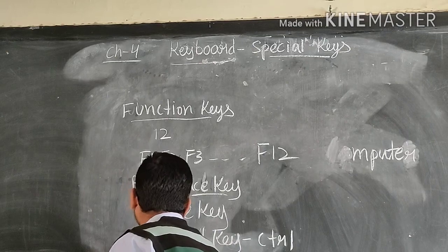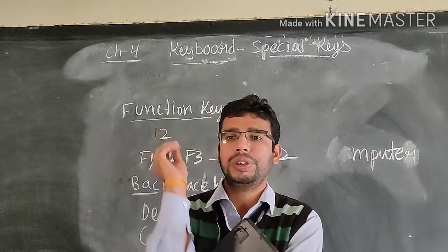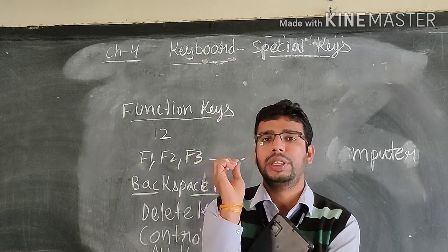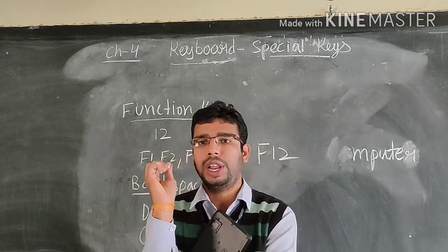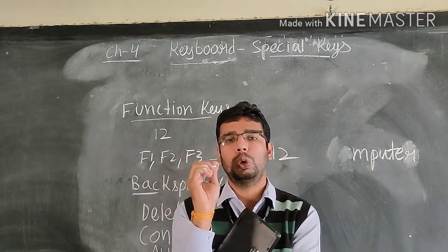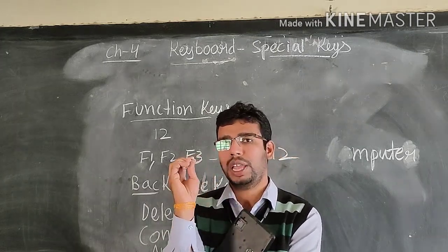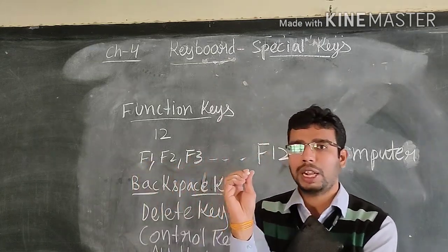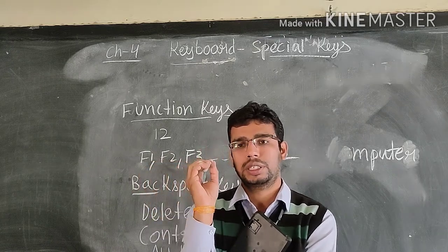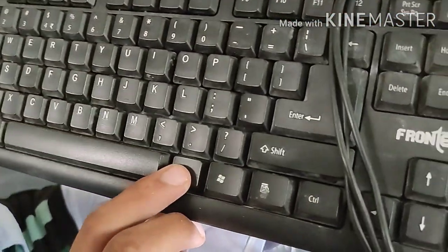Now, ALT key. ALT key is also used with other keys for different tasks, just like the control key. For example, ALT plus F4 is used to close the open window, or we can shut down the computer with ALT plus F4. There are two ALT keys — one here and another here.